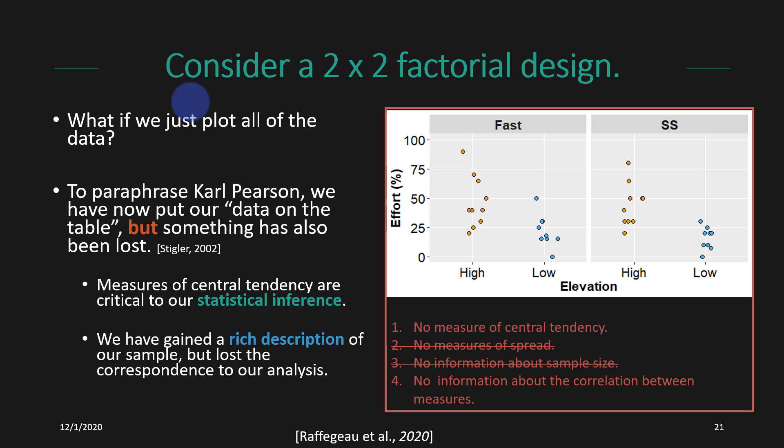So if we want to take it a step further, what if we just plot all the data? In that case, I am just showing every single data point in each of these conditions. You do get a sense of how people performed here. To paraphrase Carl Pearson, we've now put our data on the table, but we've also lost something. We're no longer showing a measure of central tendency, which is useful not only for the eye to kind of zero in on and say, on average, this is how people were doing. But measures of central tendency are also critical to the statistics that we're going to calculate. When we actually want to make an inference from the sample back to the population, we need to calculate what the mean was here. So it would be nice to show that in our figure. We've gained a rich description, but we've lost some correspondence to the analysis that we're actually going to carry out.